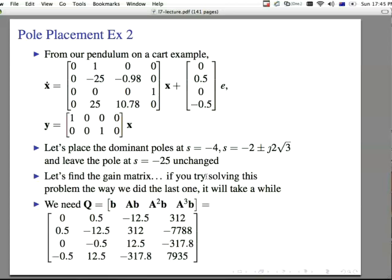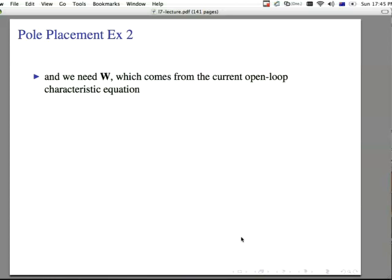And we're going to do it a different way using Bass-Gura. So let's use Bass-Gura. We need the controllability test matrix, q, and we need the w, we need a hat, and we need a. First let's find q. q is b, ab, a squared b, a cubed b. This is the n minus 1, so we stop at a cubed b. So the first column is 0, 0.5, 0, minus 0.5, just straight from b. The next one is a times b. The next one is a squared, a times a times b. And this is a times a times a times b.